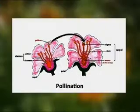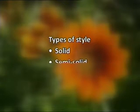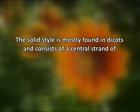In angiosperms, there are three categories or types of style based on the morphological features of the style. These are solid style, semi-solid style, and open or hollow style. The solid style is mostly found in dicots.